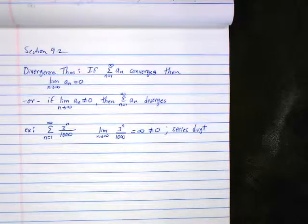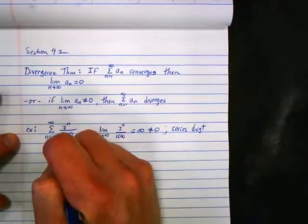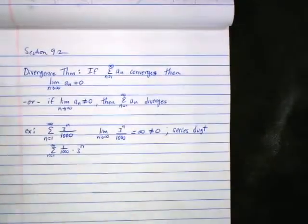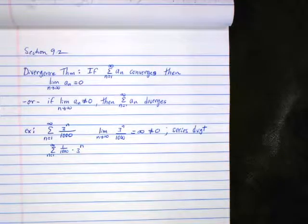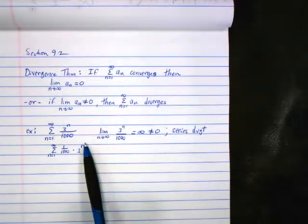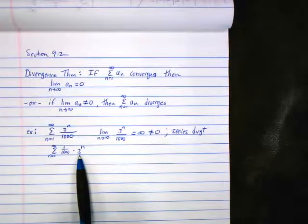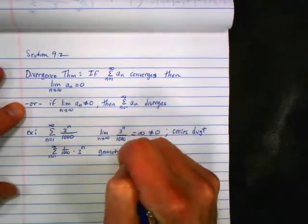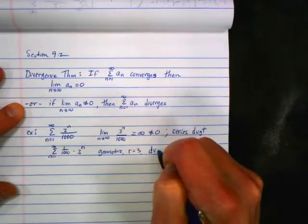Another correct answer: rewrite it as the sum from n equals 1 to infinity of 1/1000 times 3^n. That's a geometric series — it has a base 3 raised to a power. Geometric series converge when r is between negative 1 and 1. In this case r equals 3, so it's divergent. So there are two ways to show that series is divergent.